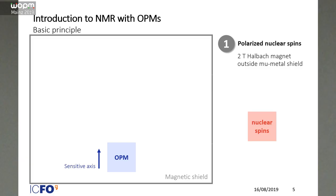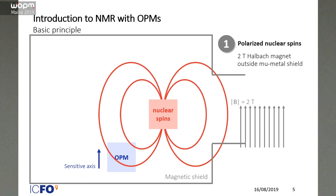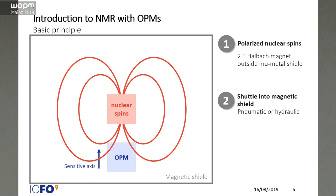Just to bring you all on the same level, I will just give you a very brief introduction how our experiment works. So we start with some nuclear spins outside the magnetic shield, we polarize them using a two Tesla Halbach magnet, then they are transferred into the shield, well either hydraulically or mechanically, and in the end we will apply a field that introduces some nuclear spin precession, and we are able to detect that with our optical pump magnetometer which sensitive axis is heading into nuclear spin direction.